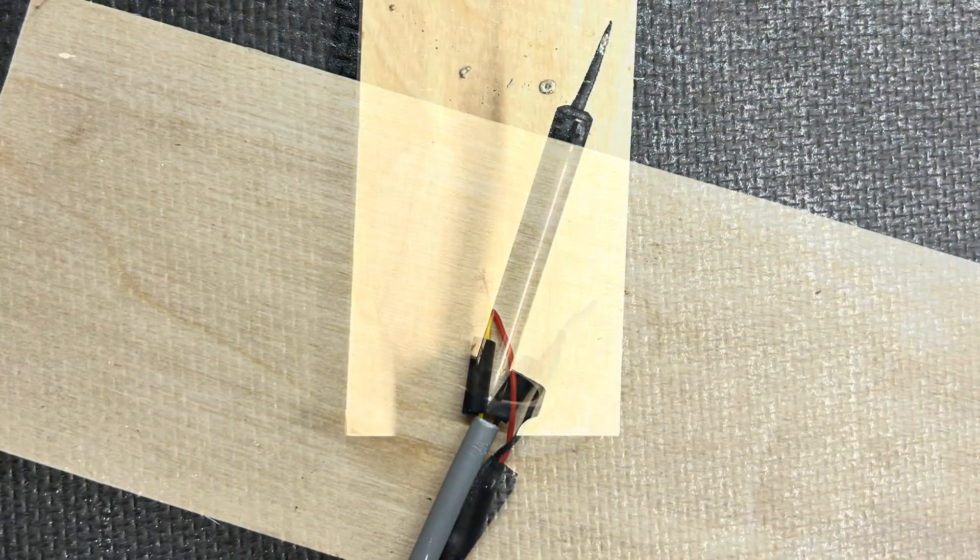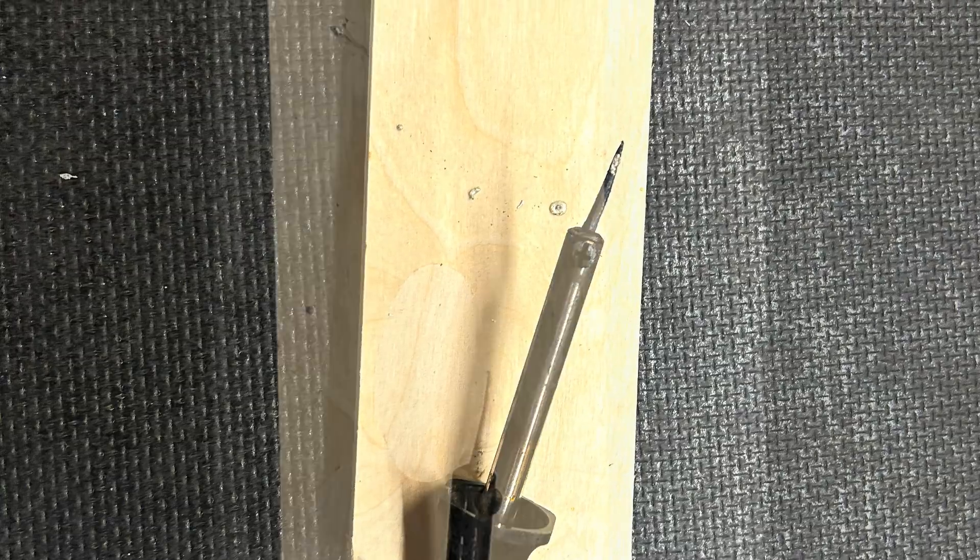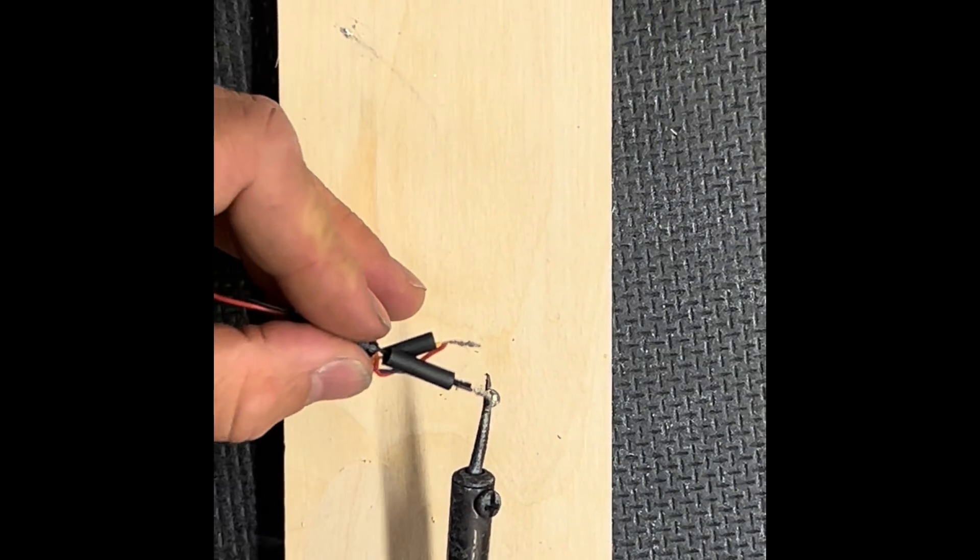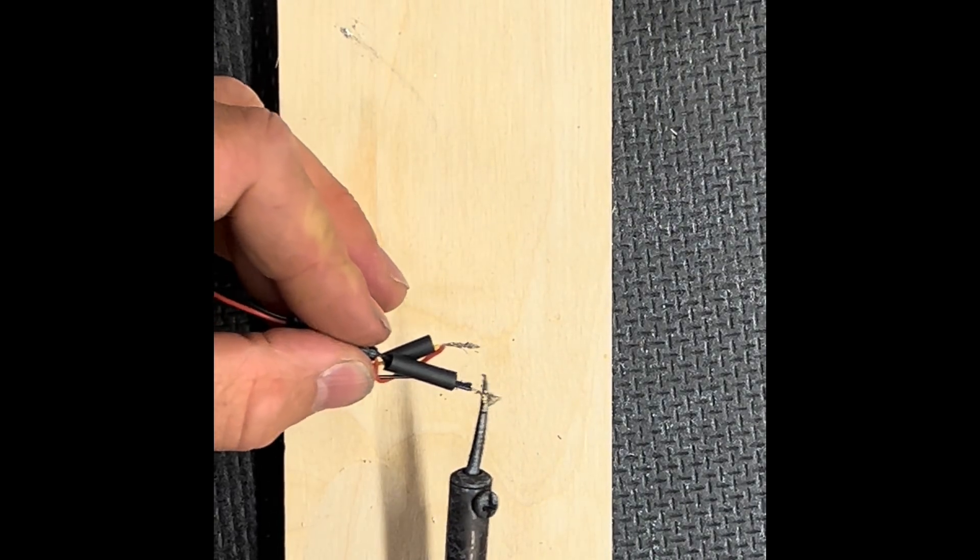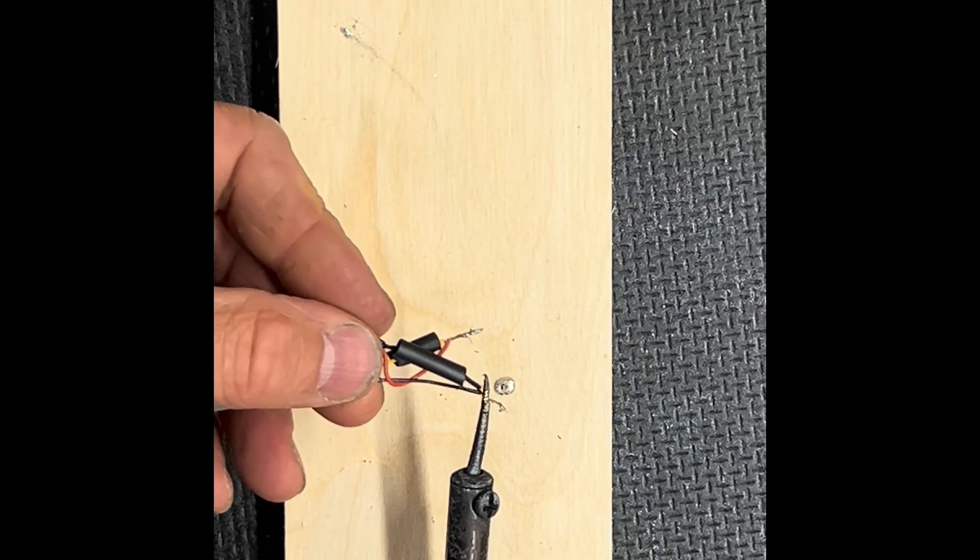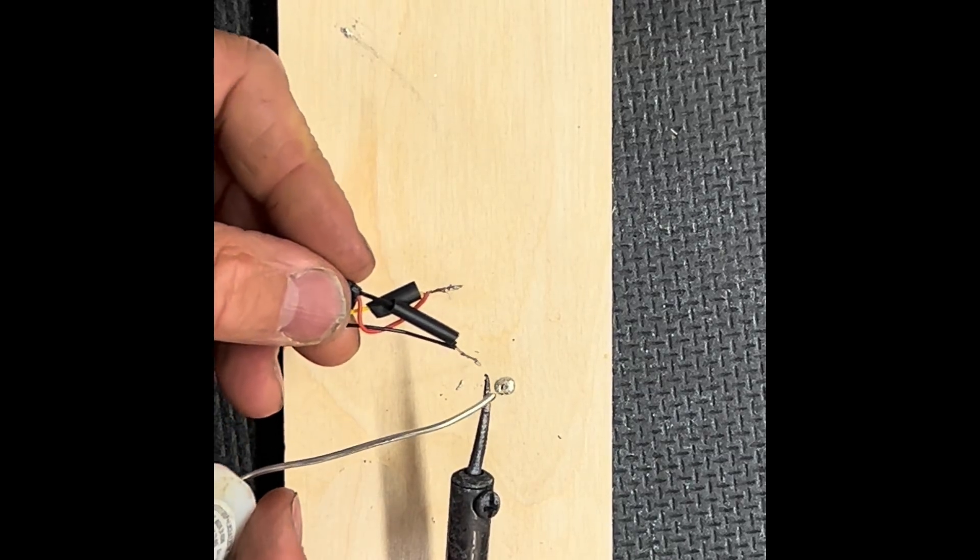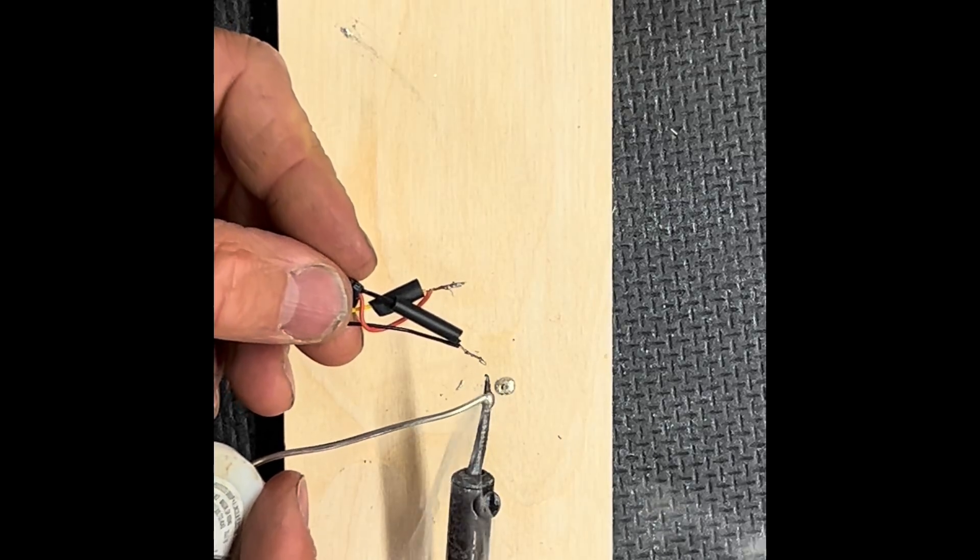By using a soldering iron and some solder, we're going to bond these two wires together. Melt a small portion of solder on the tip of the iron and run the wire through it until it wicks up the solder. You may need to add some more solder as you go.